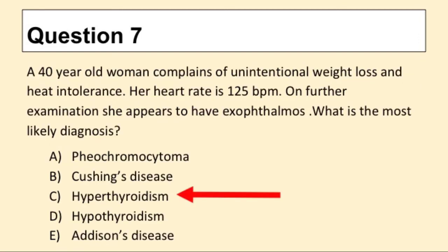Question 7. A 40-year-old woman complains of unintentional weight loss and heat intolerance. Her heart rate is 125 beats per minute. On further examination, she appears to have exophthalmos. What is the most likely diagnosis? The answer is C: hypothyroidism.